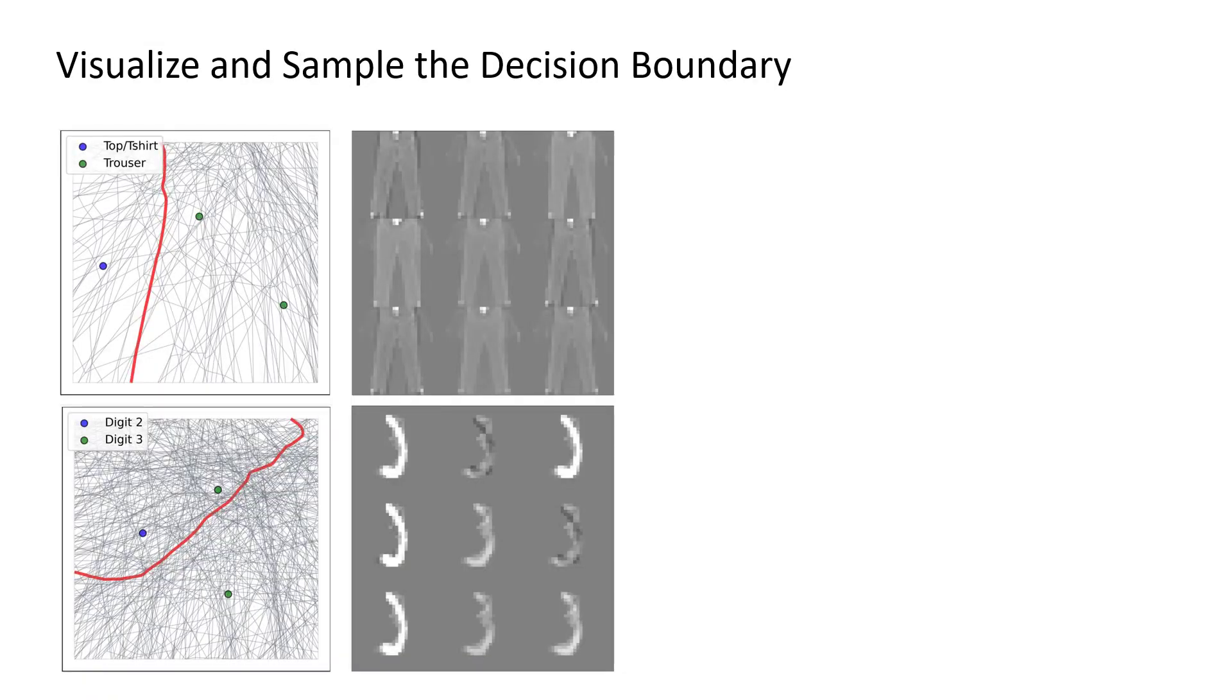SplineCam can be used to visualize decision boundaries and sample infinitely many points that are provably on the boundary. Looking at these samples can also provide us insights on the bias of the network.